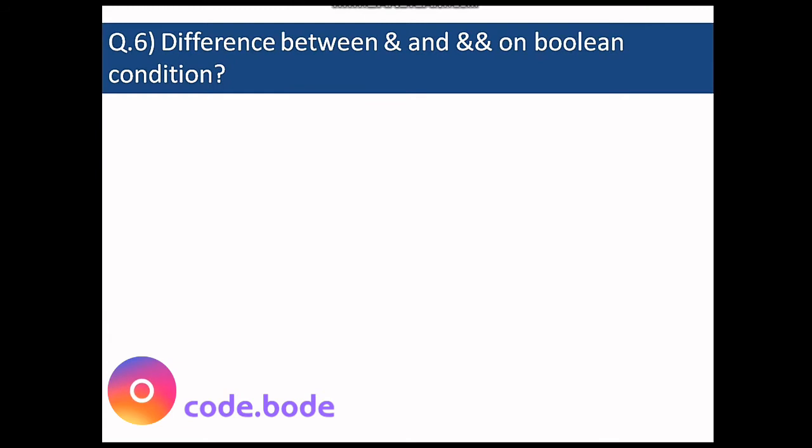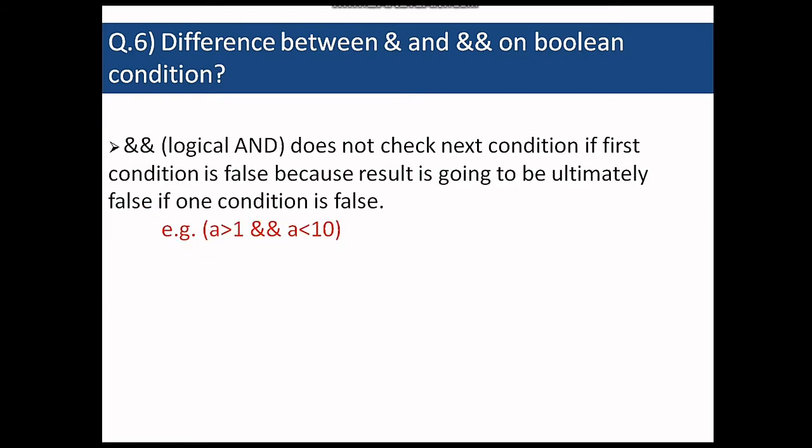So what is the difference between bitwise and, that is with a single ampersand sign, and logical and, that is with double ampersand sign, on a boolean condition. So both are used to check if the conditions are true and return true or false in the boolean condition. So first we'll see logical and. It does not check the next condition if the first condition is false. So suppose for example a greater than 1 and and a less than 10. If we are checking this condition and a is equal to 0, so obviously our first condition is false. So the compiler doesn't need to check the second condition because in and if the first condition is false, whatever might be the second condition the result is going to be false.